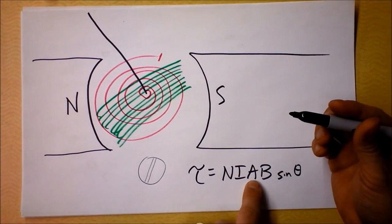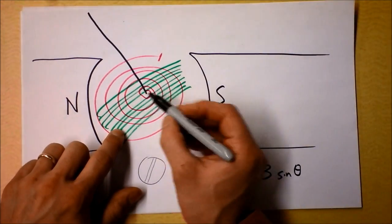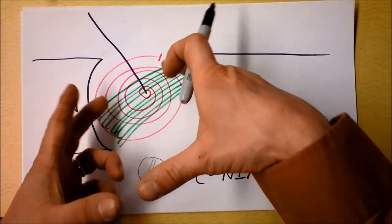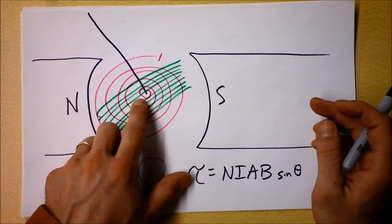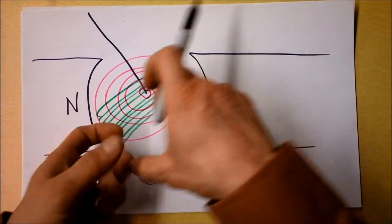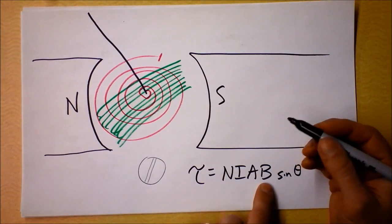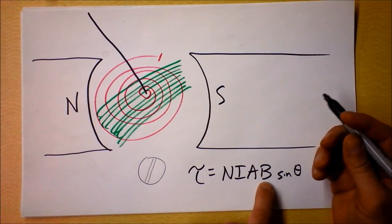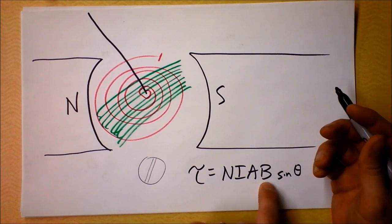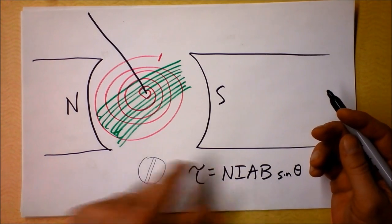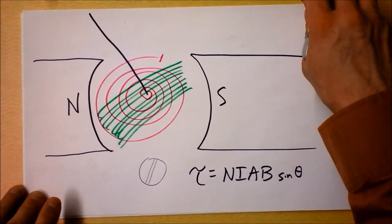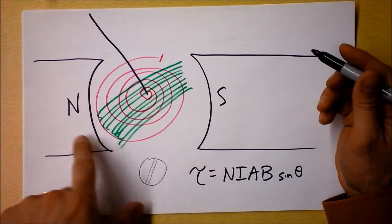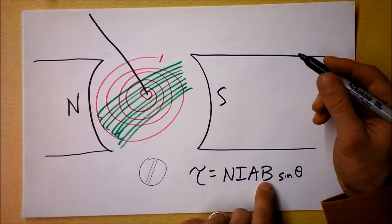I could also increase the area inside. So the bigger my loops are, if I expanded those loops, I would make a more sensitive galvanometer. I could also make a stronger magnetic field outside. And you can bet that in 1915 or something when they made that, they were probably using the best magnet technology available. Now we would probably make them with some neodymium stuff and make it quite a bit stronger magnetic field.